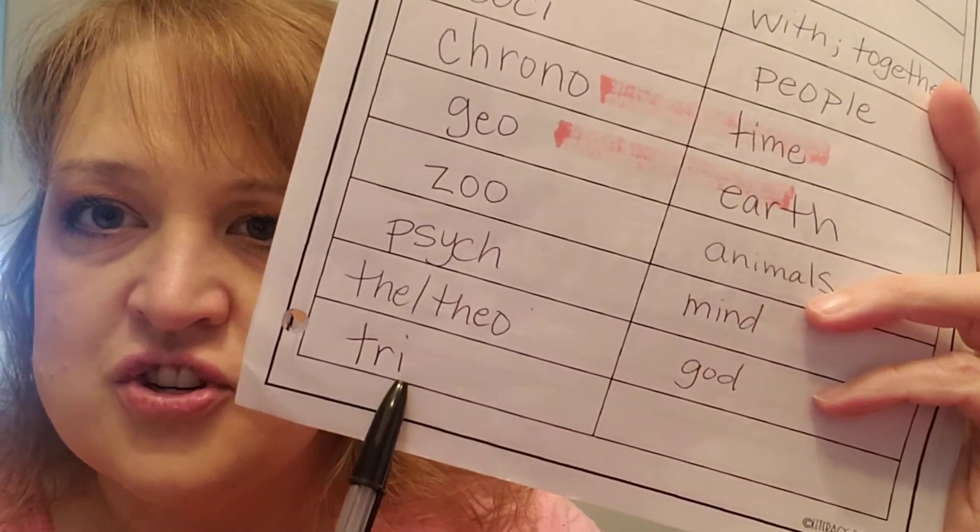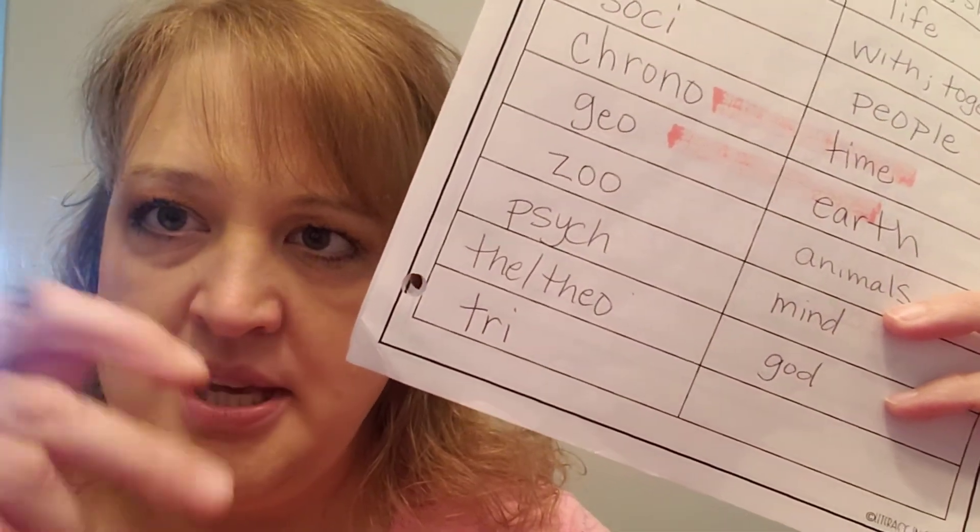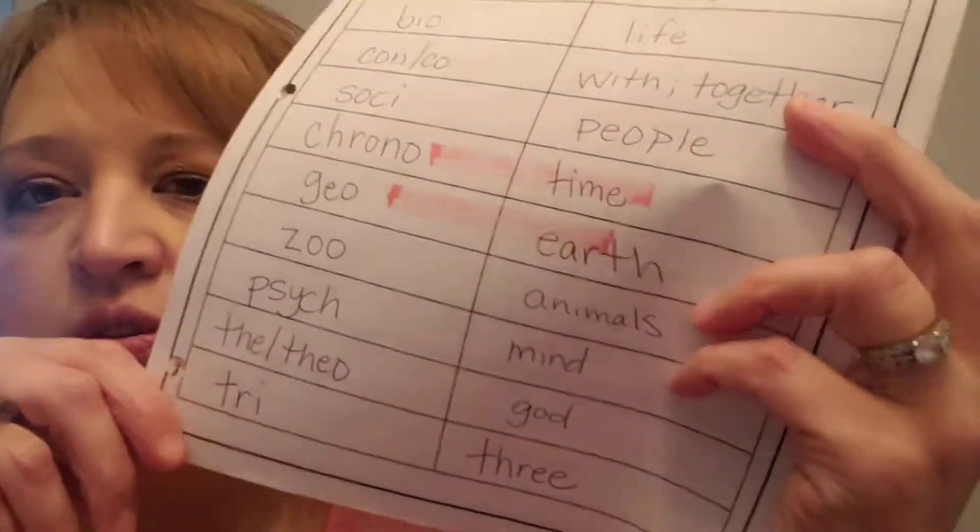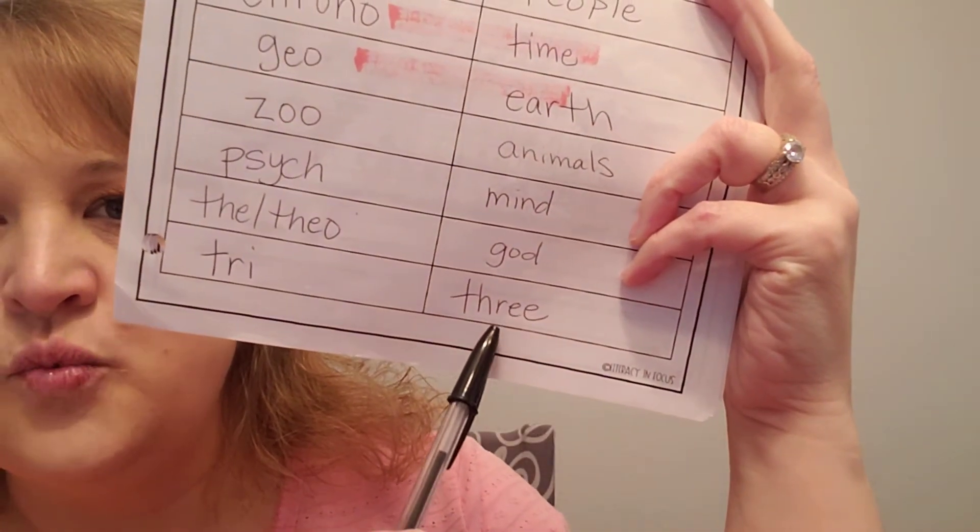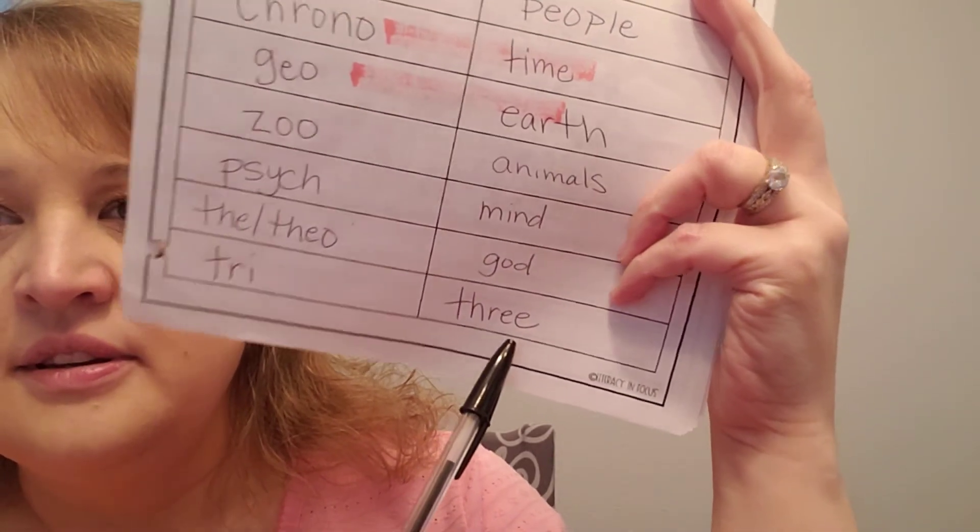We're gonna do tri. Tri. What does tri mean? We live in the tri-cities. It means three. Tri means three. So when you see a word that has T-R-I in it, we know that it has something to do with three. Three cities, three angles, three legs, tri. Okay, so our tri-cities are Richland, Kennewick, Pasco. Those are our three.